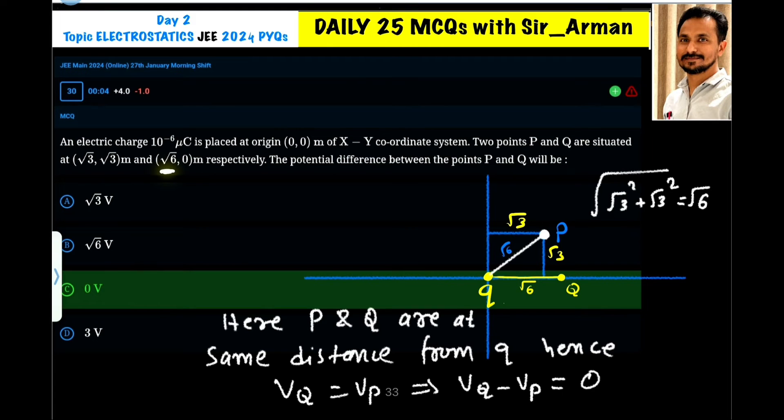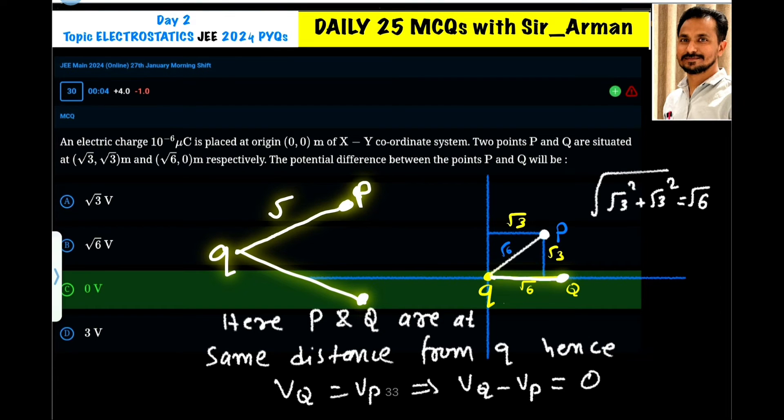There is another point Q at distance √6, 0. The two points are lying at exactly the same distance. Point P is at √6 distance and point Q is also at distance √6.